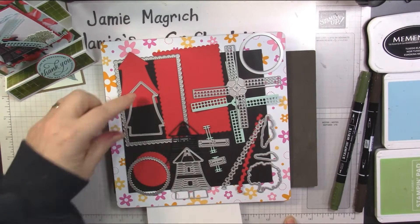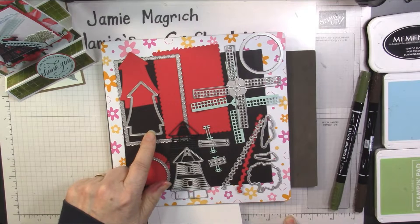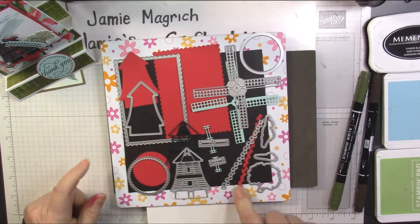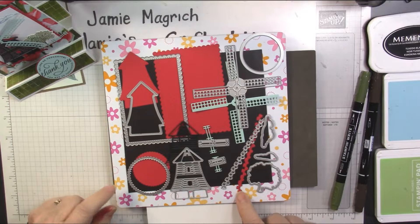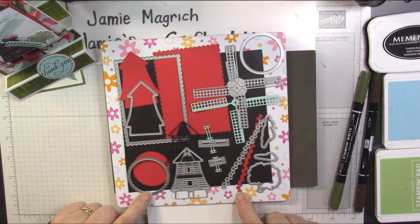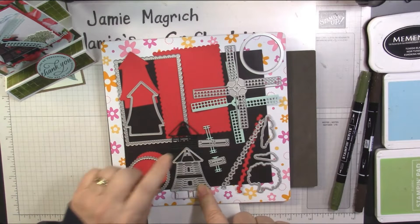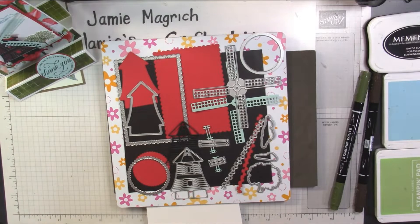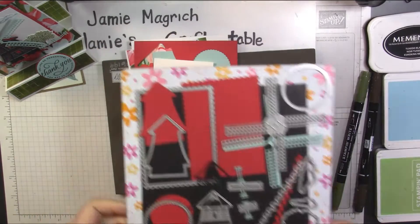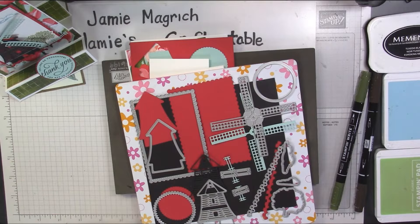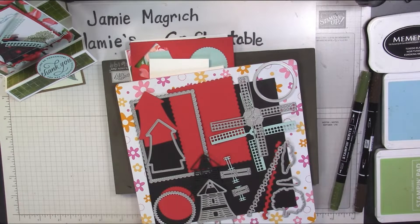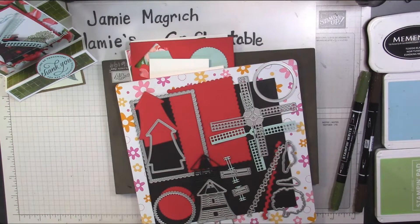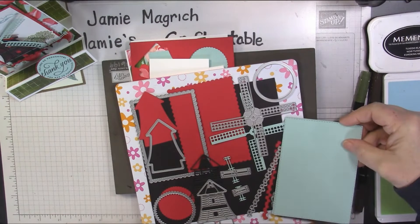So I've cut from Real Red the layer for the windmill, Stitch So Sweetly scallop, this little tulip strip, and this scalloped circle. From black I've cut the detail layer from the windmill. And from, maybe it's Pool Party. I can't remember. Let me get it out and look. Yeah, it is Pool Party.